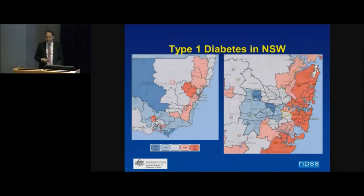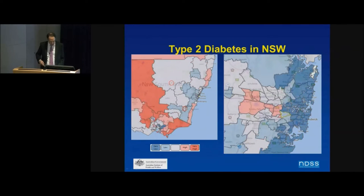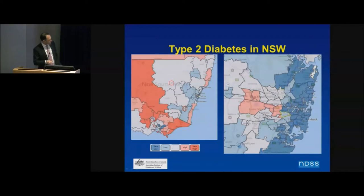Within New South Wales there's also geographic variation. Type 1 diabetes tends to be much more common in coastal areas, whereas type 2 diabetes is much more prevalent in inland areas. So there's a different distribution within states as well as across Australia, which are interesting and worthwhile figures.